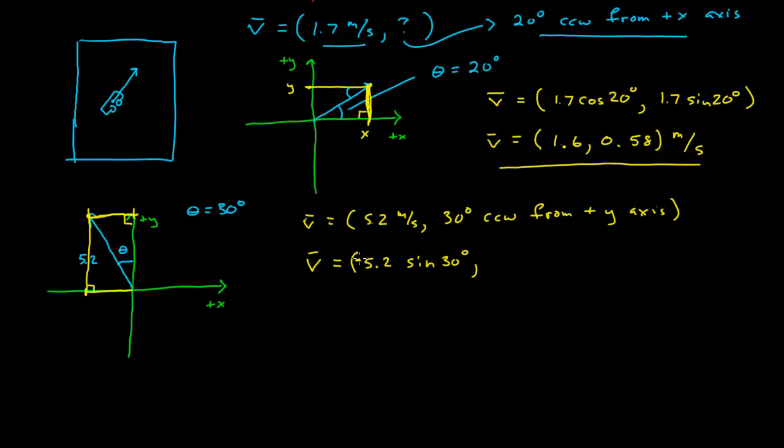And so now if I want to look at the y-coordinate, I'm looking for this length here. And that length is given by 5.2 cosine of 30 degrees. And it is above the x-axis, so that's a positive number. And so now I can go ahead and calculate those, and I get negative 2.6 meters per second, and then 4.5 meters per second.